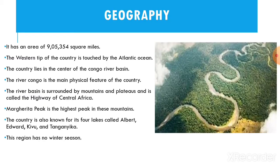It has an area of 905,354 square miles. The western tip of the country is touched by the Atlantic Ocean. The country lies in the center of the Congo River Basin, and the river Congo is the main physical feature of the country. The river basin is surrounded by mountains and plateaus and is called the highway of Central Africa. Margareta Peak is the highest peak in these mountains.